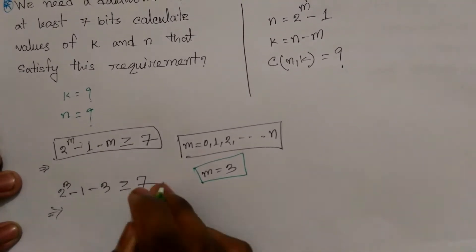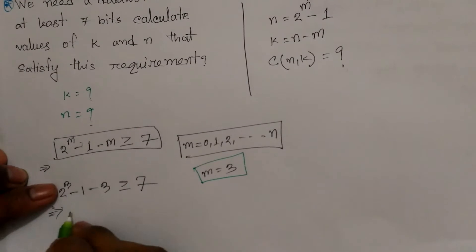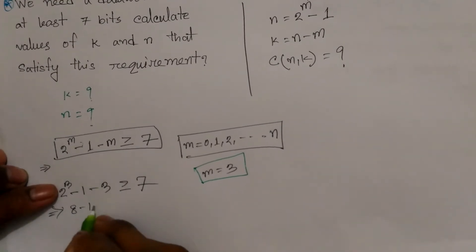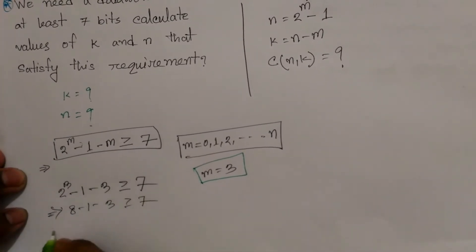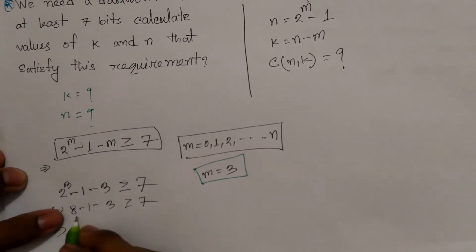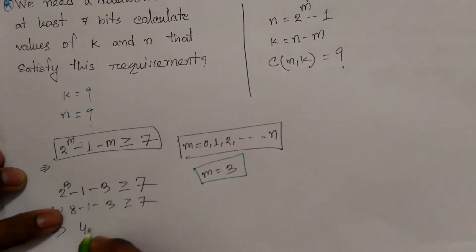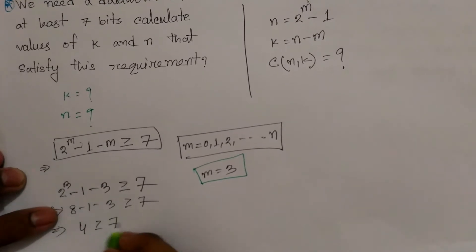So that is true. 8 minus 1 minus 3 is equal to 7, so the output is equal to 7.